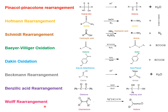In Wolff rearrangement, the reactant is a diazo ketone. Diazo means two nitrogens, so we have a ketone whose adjacent carbon contains two nitrogens. When this diazo ketone undergoes Wolff rearrangement in the presence of light or silver oxide, it is converted into a ketene. Ketene is a combination of ketone and alkene — the central carbon has a double bond to oxygen on one side and a double bond to carbon on the other. These ketenes can undergo various reactions, but the key transformation in Wolff rearrangement is conversion of a diazo ketone to a ketene.